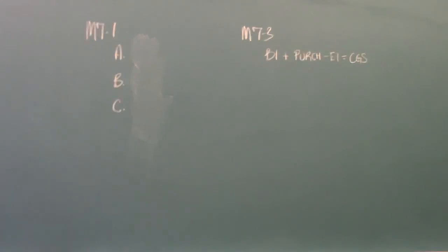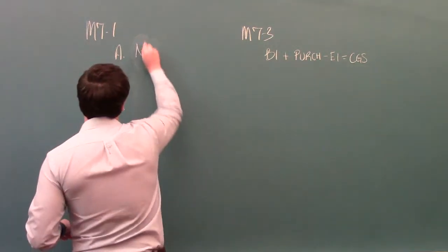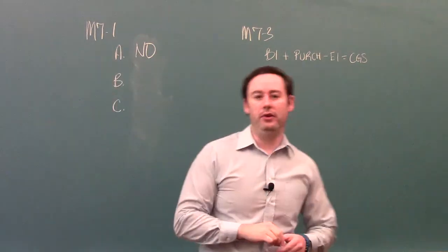M71 says, explain whether the following items should be included in the inventory of Knott Inc., a company that arranges and sells wedding supplies and services. Part A says, goods are being held by Knott on consignment from Emerald Bridal. Should these be included in Knott's inventory? The answer is they should not be included in Knott's inventory.